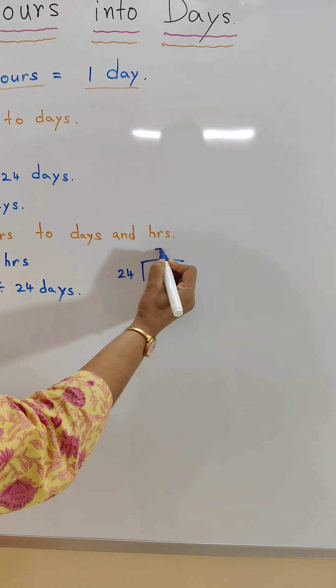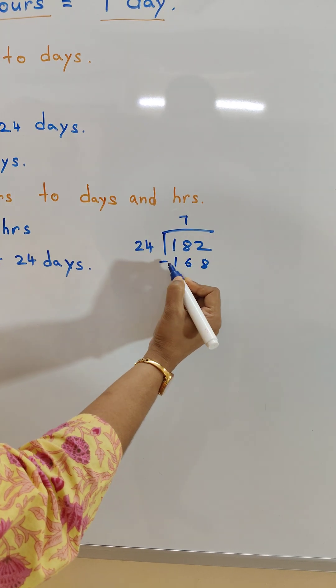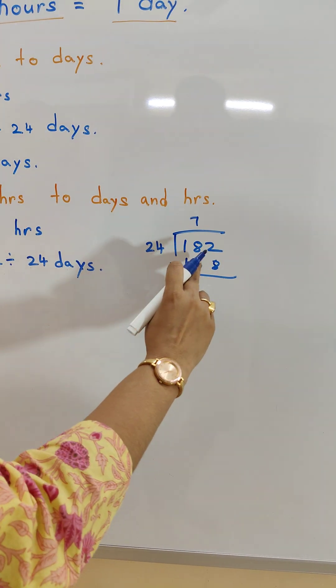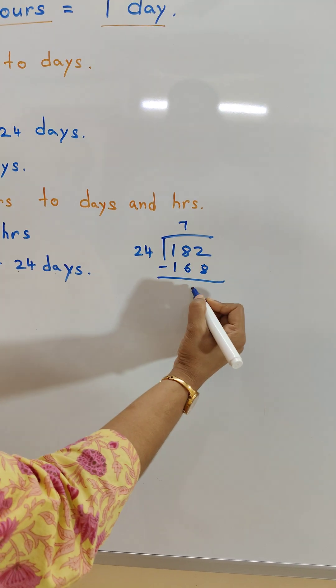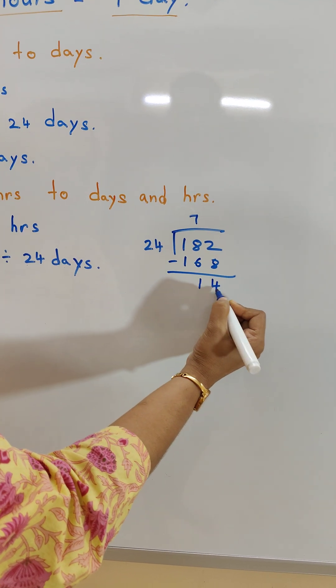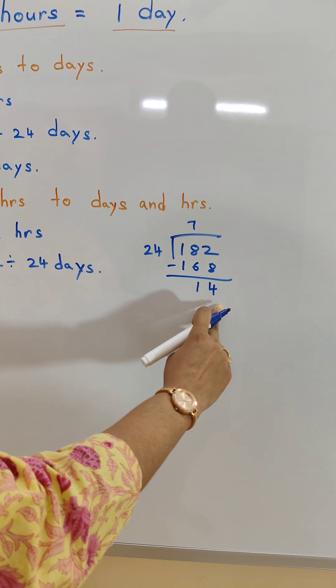24 times 7 is 168. Now we will subtract 182 minus 168. We get 14. So 7 is the quotient and 14 is the remainder.